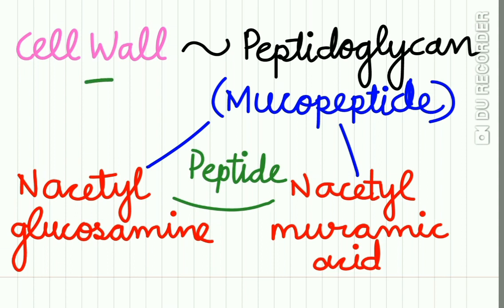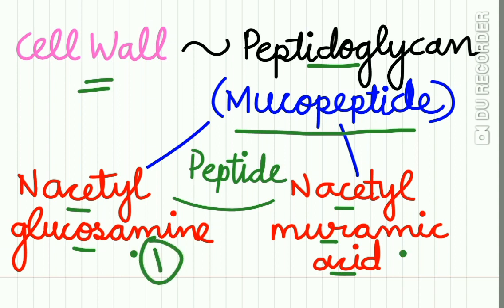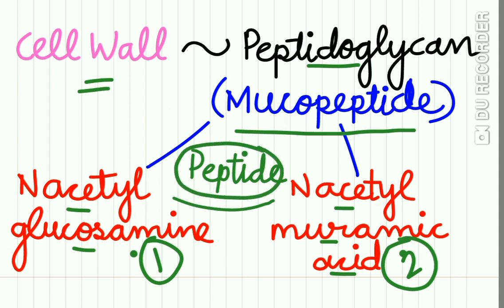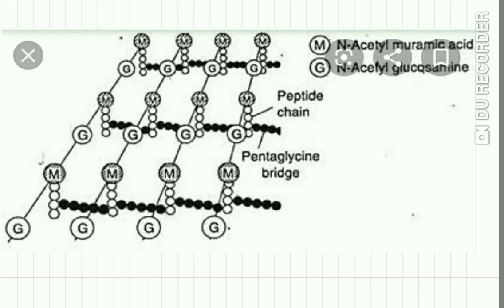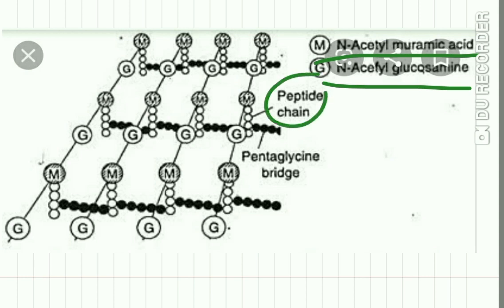The cell wall is made up of peptidoglycan, which is a mucopeptide composed of N-acetylglucosamine and N-acetylmuramic acid. These two are arranged alternately and are linked together by a peptide linkage. In the diagram you can see the structure of the cell wall made up of N-acetylmuramic acid and N-acetylglucosamine linked together by peptide linkages.